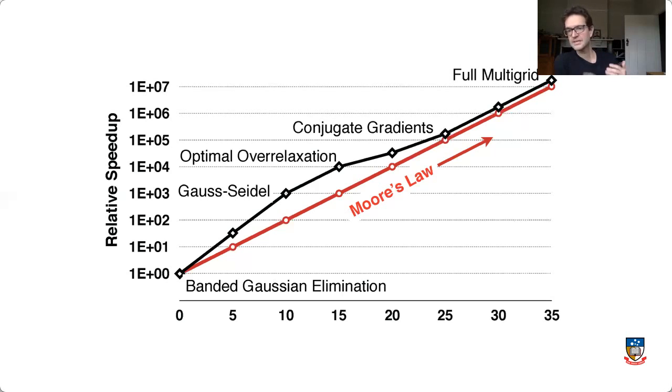So the red line here shows you Moore's law, which says that processing power increases or doubles at roughly every 18 months or so. So that's the exponential growth of sheer computing power on the red curve there.